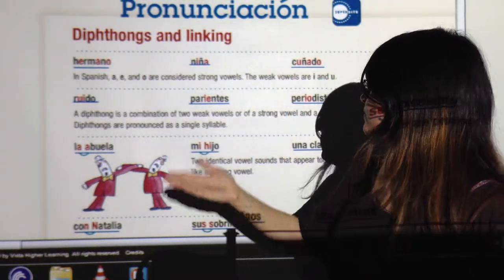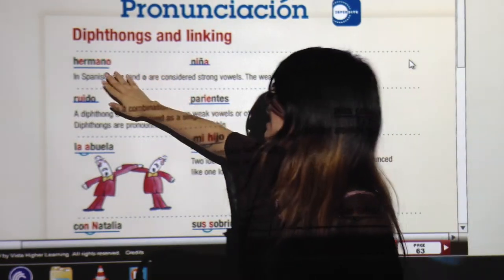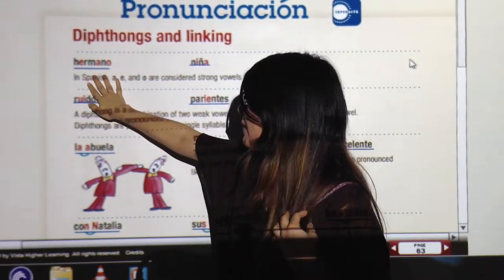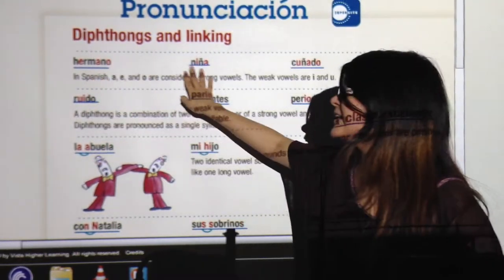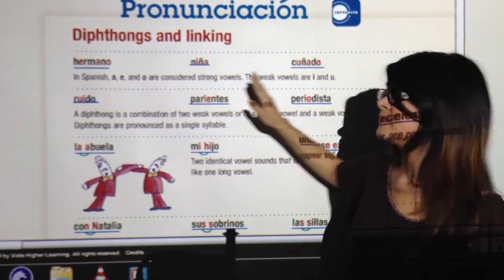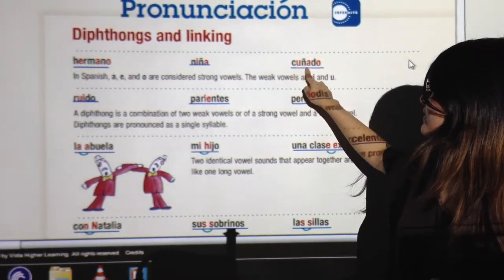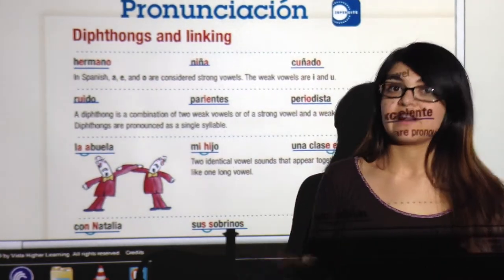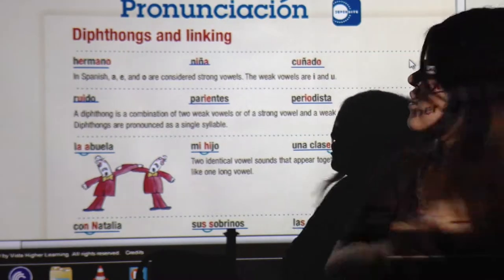So this will help you because you have to consider this when you are pronouncing a word. Hermano. Repeat with me. Hermano. Niña. Cuñado. Let's repeat this again because the ñ is really important. Cuñado. Cuñado. Ña, ña. Good.